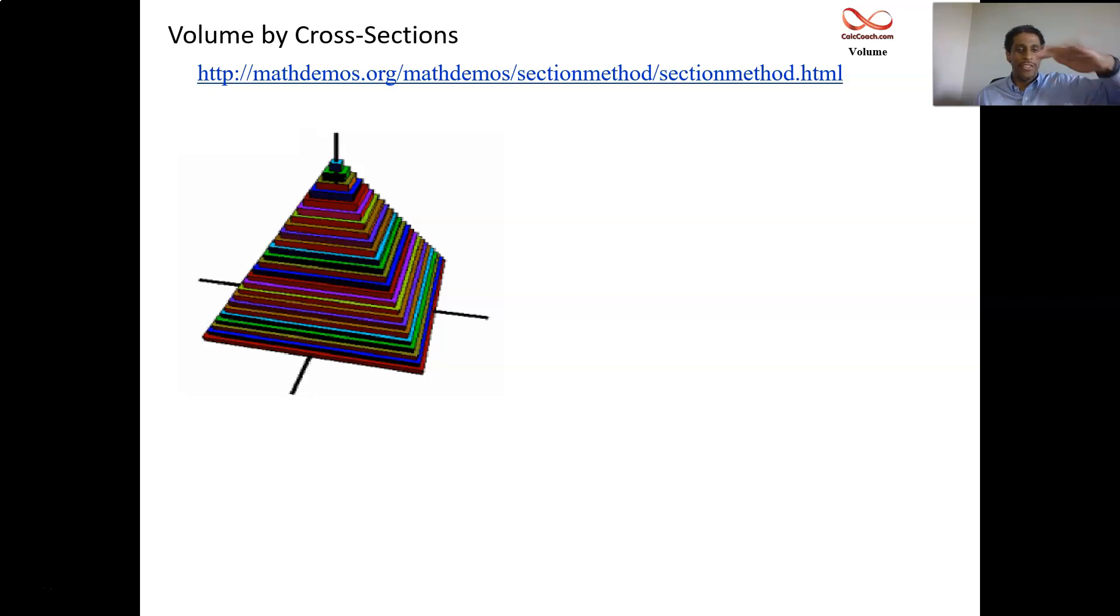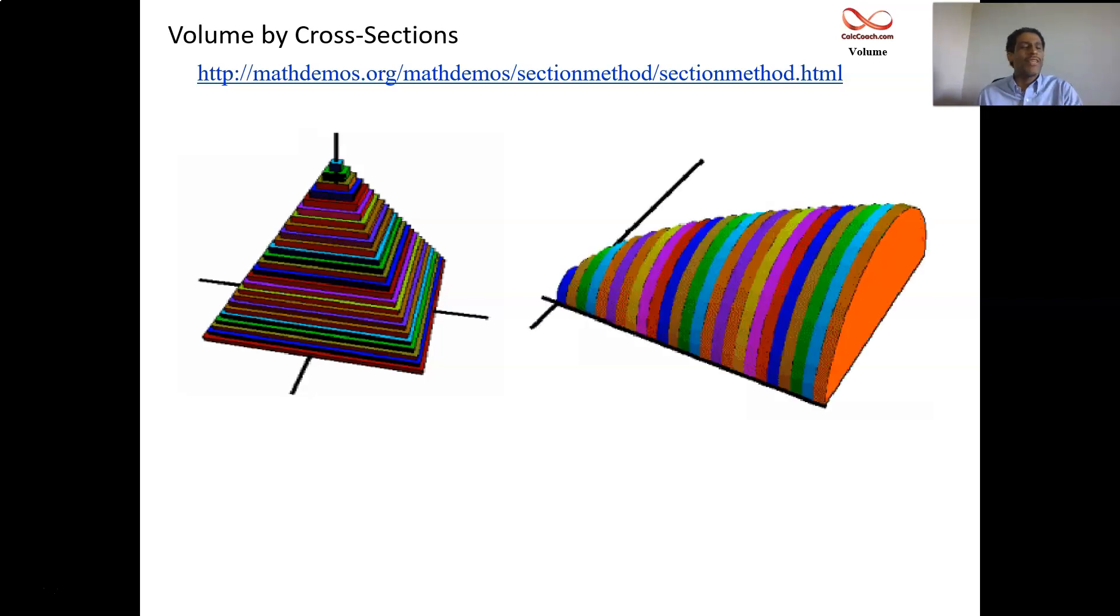Here, the cross sections are squares and they're stacked on top of each other in the pyramid. Here, the cross sections are semi circles, half of a circle. And they fit this curve, which looks like y equals root x. And we can actually do these problems here. But this website has nice animations with the different colors and helps you to visualize more than I can do by hand by drawing.